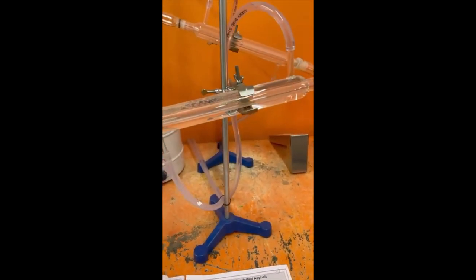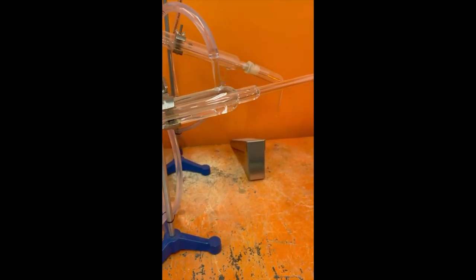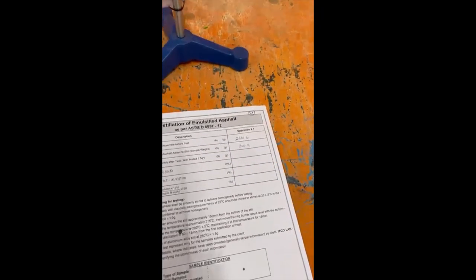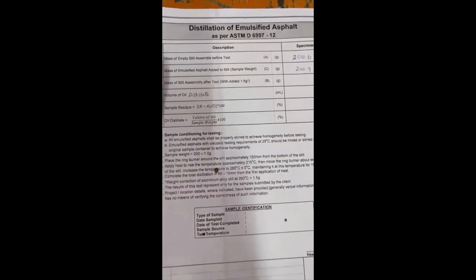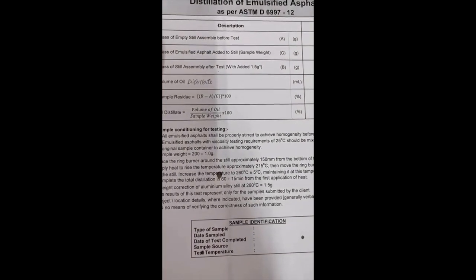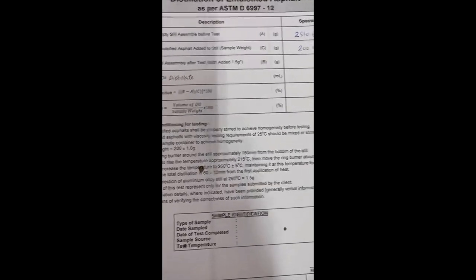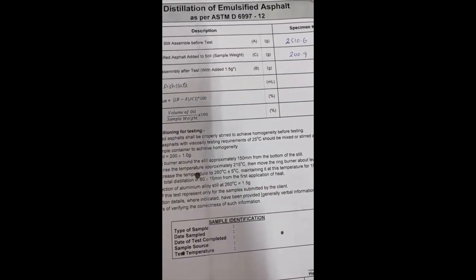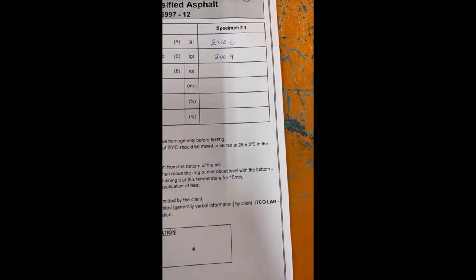Now the sample here, this is emulsified asphalt. We took the mass of the empty steel apparatus, 2510 grams, and we added asphalt, 200 grams.